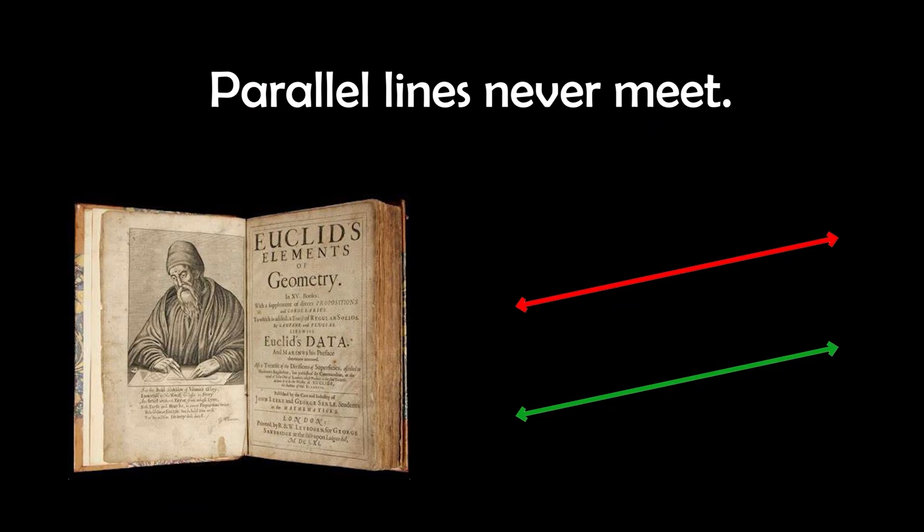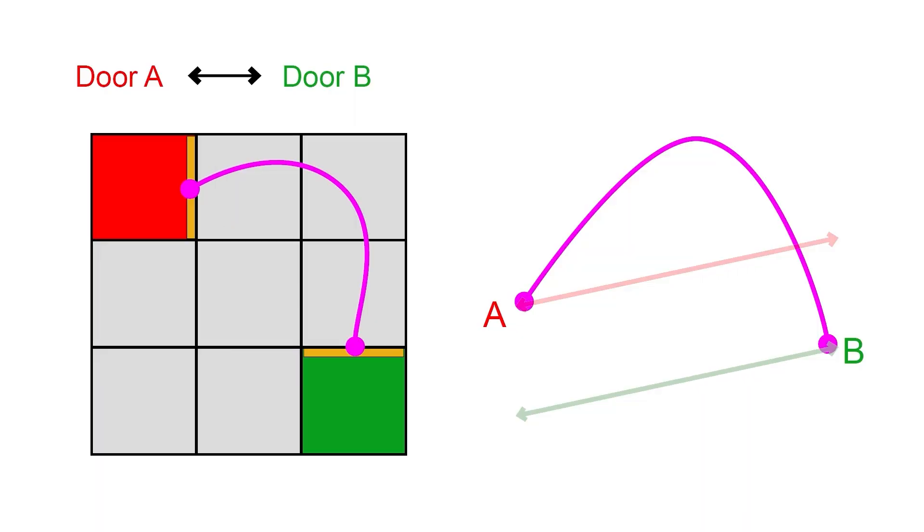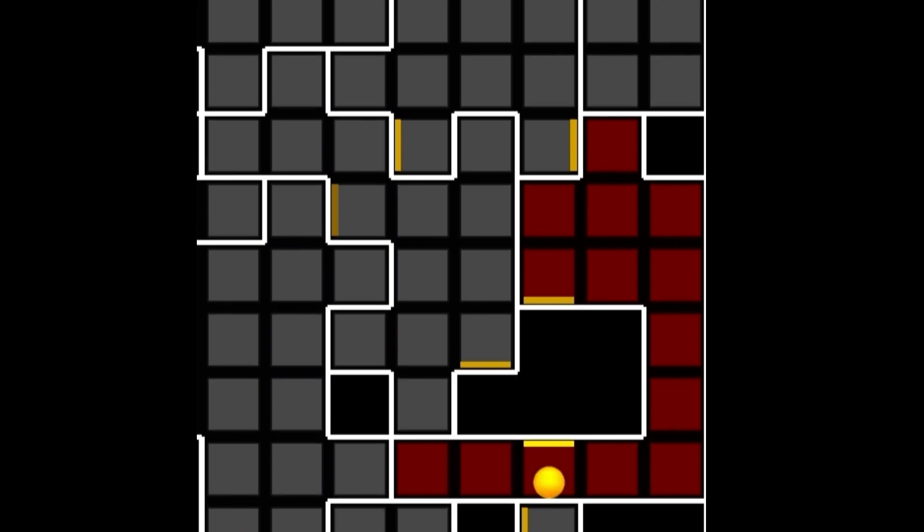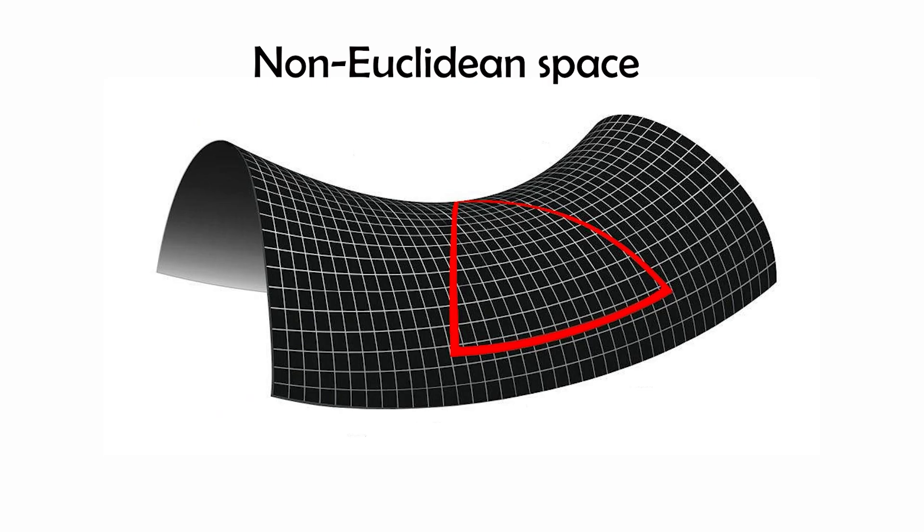This game breaks Euclid's rules. Parallel lines can never meet. Doors act as identity maps, folding the space so a straight path locally might teleport you globally. It proves you're in mind-bending space.